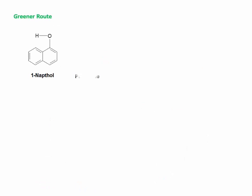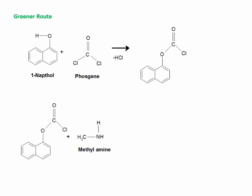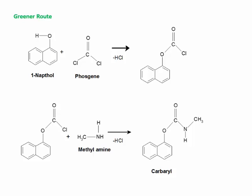In the greener route, 1-naphthol is treated first with phosgene. The lone pair on the oxygen attacks the positively charged carbon, Cl minus is released, and the negatively charged chlorine abstracts the hydrogen while the lone pair on oxygen is retained. HCl is eliminated to give an intermediate. This intermediate is then treated with methyl amine: the lone pair on nitrogen attacks the carbon, chlorine minus is eliminated, and HCl is eliminated to give the final product, carbaryl.